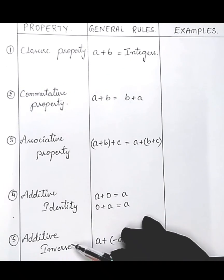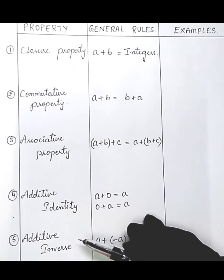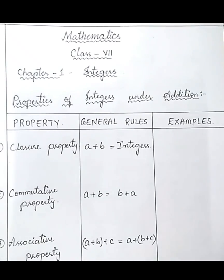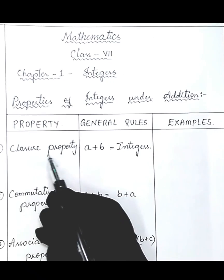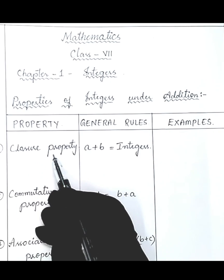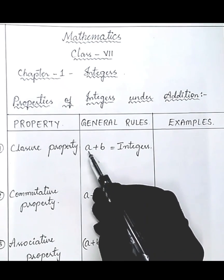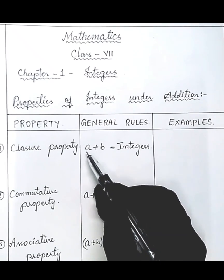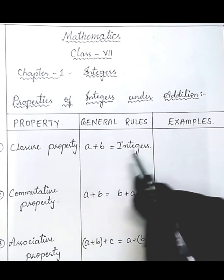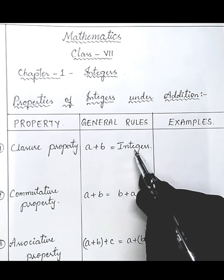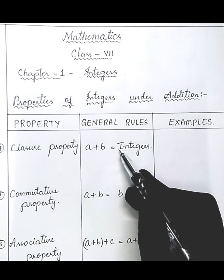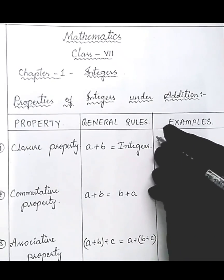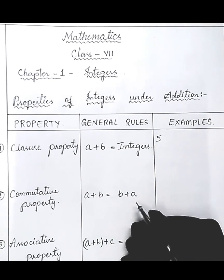Let us learn in detail about all these properties. The first property is closure property. In this, if two integers are there — a and b — the sum of a and b is also an integer. Let's understand this with an example. Five is an integer.